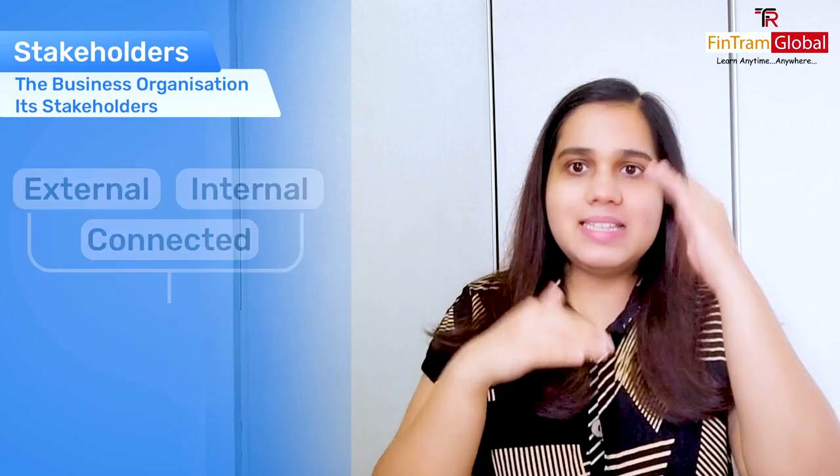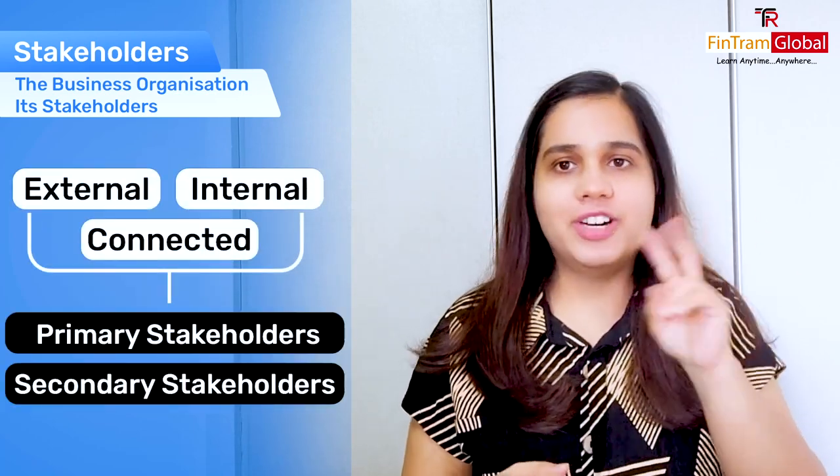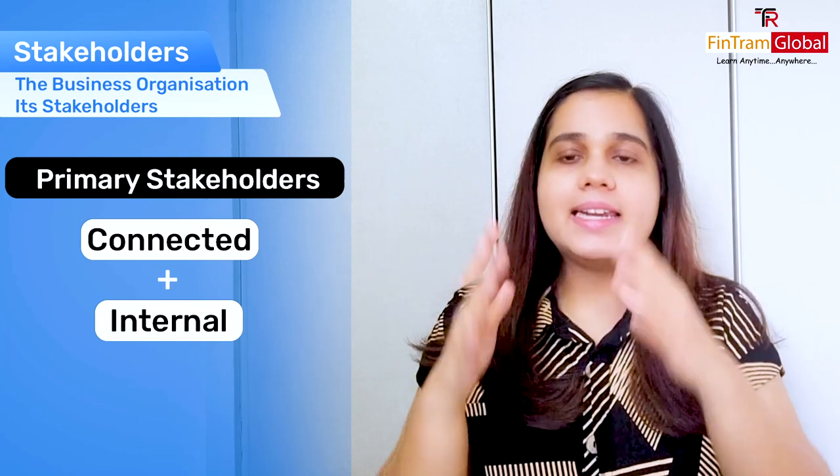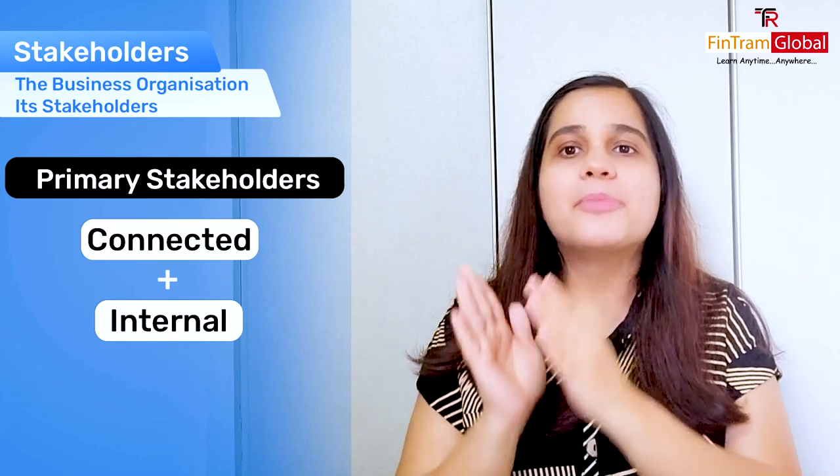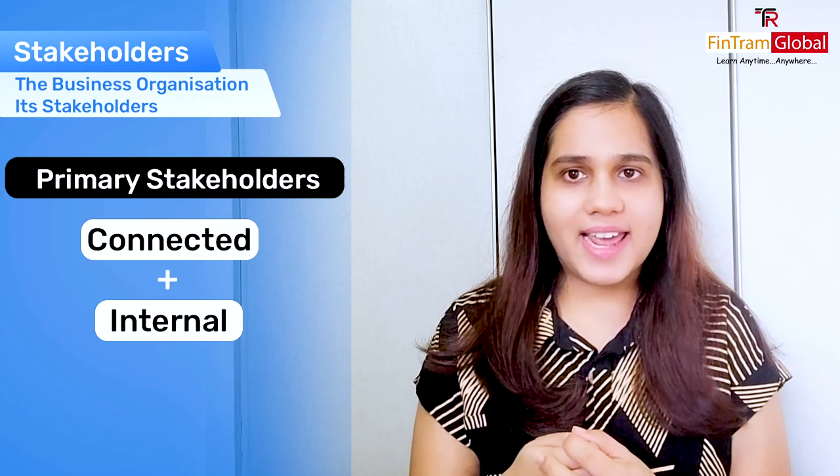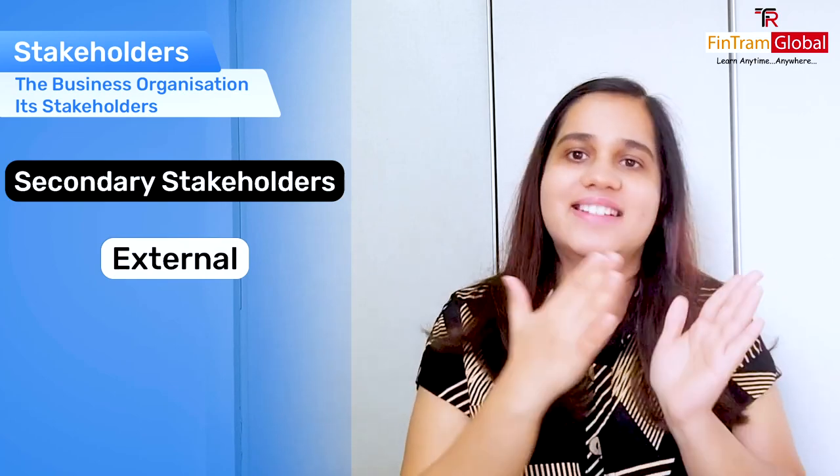Apart from all this, these three categories are actually put into two further groups. We have our primary stakeholders — basically your connected and your internal stakeholders fall into the category of primary stakeholders, as they will have some sort of a link with the organization. Your secondary stakeholders will be your external stakeholders. They will not have any direct link, but they will have some sort of interest, or they could affect or be affected by your organization's actions. For example, the public at large will fall into this category — they will be an external stakeholder and hence a secondary stakeholder.